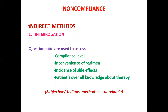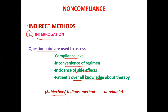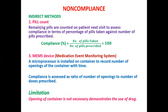The indirect methods include: the interrogation method, where simple questionnaires are used to assess compliance level regarding inconveniences of the regimen, incidence of side effects, or patient knowledge about therapy — though this is a subjective and tedious method. The pill count method is also used, where compliance percentage equals the number of pills taken divided by the number of pills prescribed, multiplied by 100.